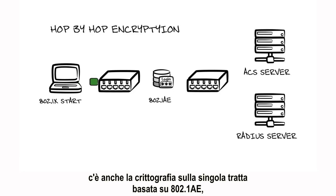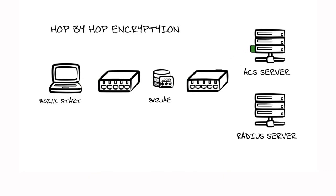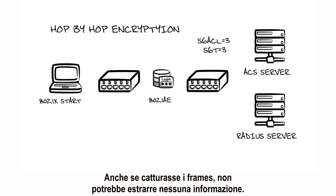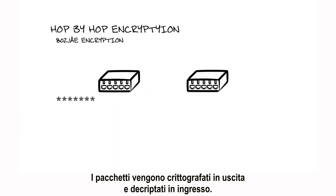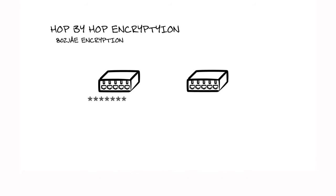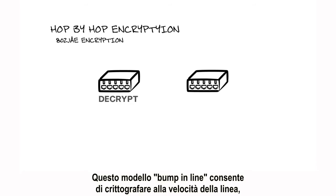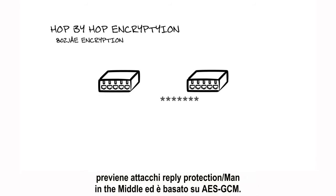To ensure confidentiality and integrity, there's also hop-by-hop encryption that's based on 802.1AE to complete TrustSec. So even if the frames are captured, they don't give up any information. Packets are encrypted on egress and decrypted on ingress. This bump-in-the-line model runs encryption at line rate, prevents replay protection and man-in-the-middle attacks, and it's based on the AES GCM mode.